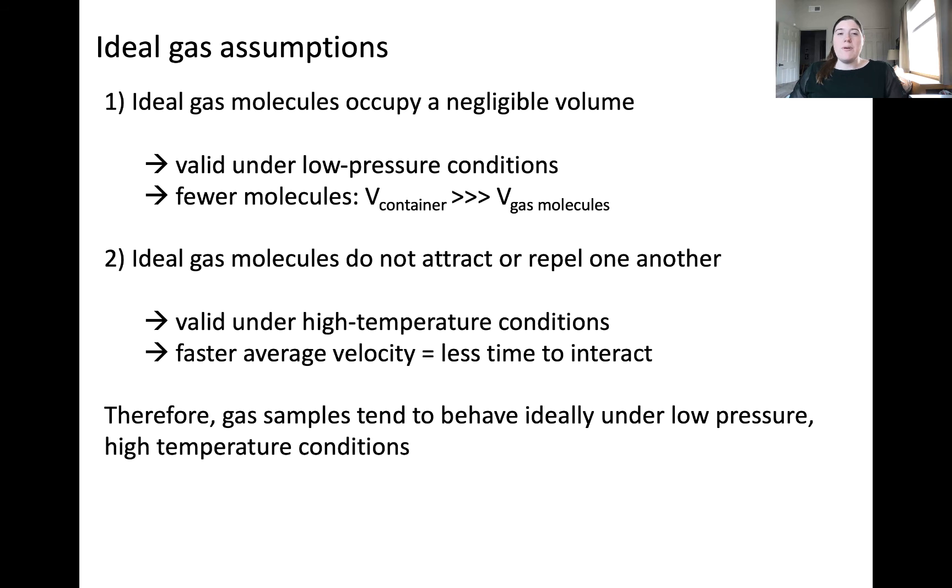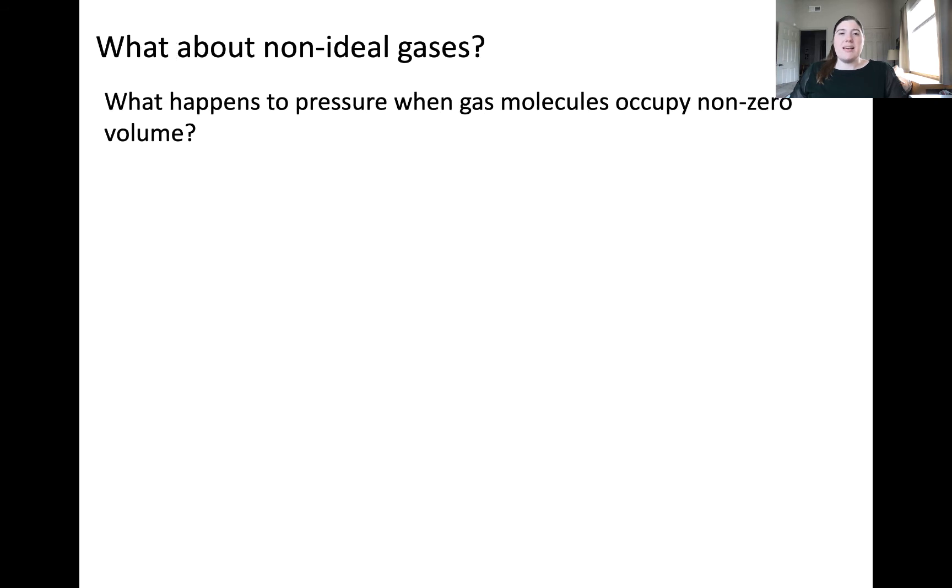You might be wondering, well what about samples that behave under different sets of conditions? For example, what if we assume that gas molecules do occupy some volume? The impact of gas molecules occupying volume means that we would need to adjust the ideal gas law to account for this.